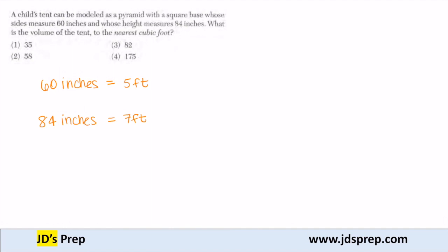Now we need to find the volume of the pyramid. And the formula for volume of a pyramid is 1 third length times width times height. Because this pyramid has a square base, then the length and the width have the same measure, and they're both 5.